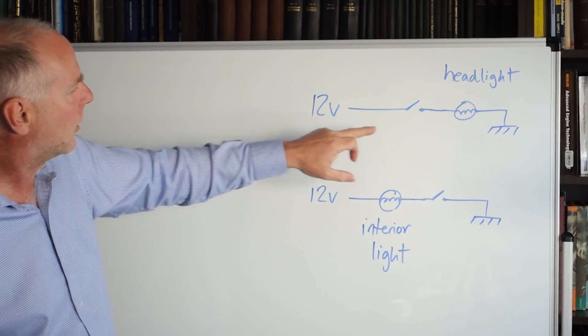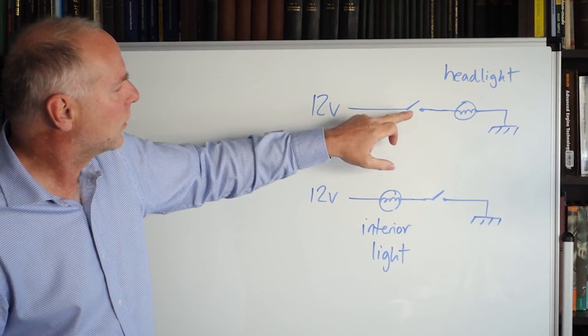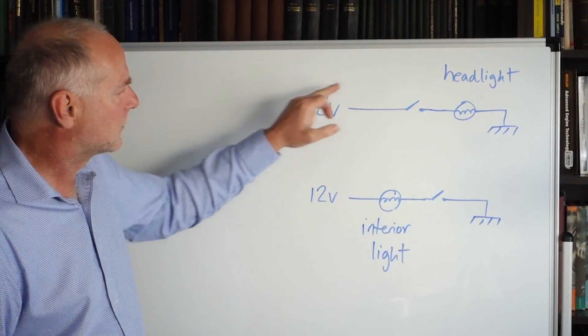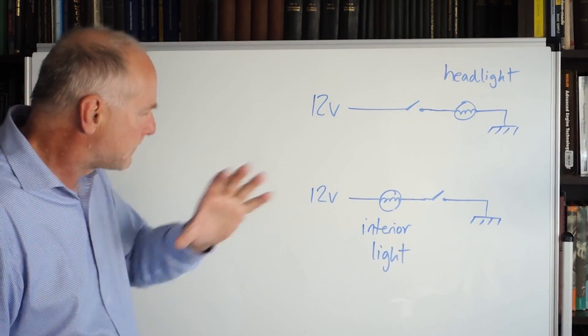So the top one, we've got the headlights. We've got 12 volts being fed to the headlight switch. When that switch is closed, power passes through it, turns on the headlight, and of course, the electrical circuit is complete because that's connected to the negative side of the battery. Easy.